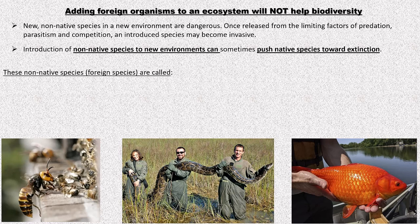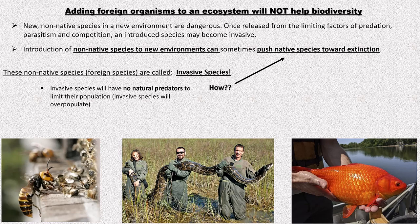A new non-native species in a new environment is dangerous because they're released from the limiting factors they usually have at home — no predators, parasites, or competition. Introduction of non-native species can push native species to extinction; these are called invasive species. Murder hornets, for example, are from Asia and are now in the United States. They're killing honeybees, which are vital for pollinating many plants, destroying entire trophic levels in an ecosystem with resounding repercussions for many other organisms.